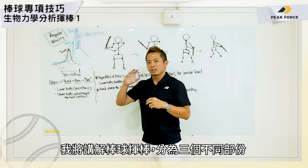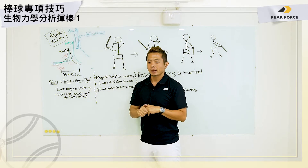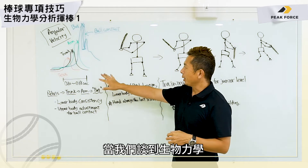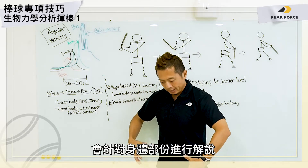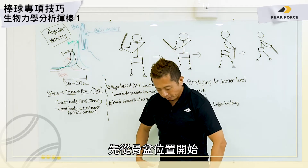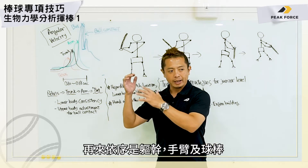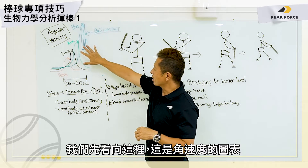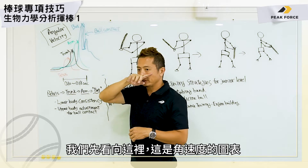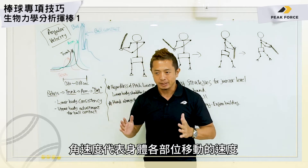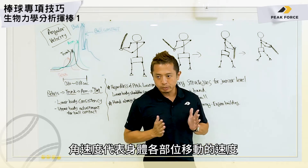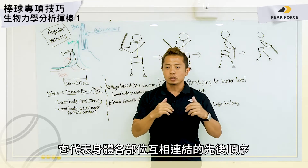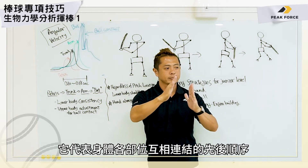I'm going to talk about baseball hitting in three different parts. The first part is the biomechanics of the baseball swing. When we talk about the biomechanics, I'm looking specifically at segments of the body — starting from the pelvis, then the trunk, then the arm, and then the baseball bat. This graph shows angular velocity, which means how fast each segment moves. It's a great representation of what's called a kinetic chain sequence.